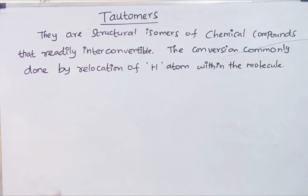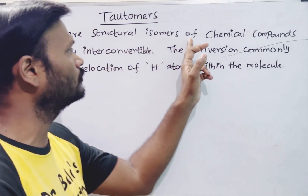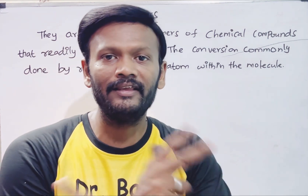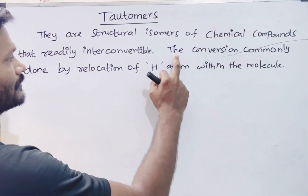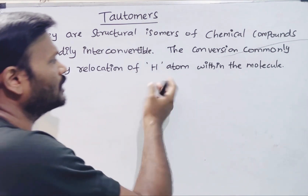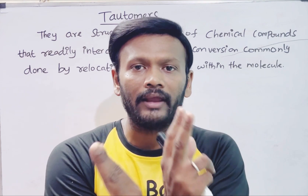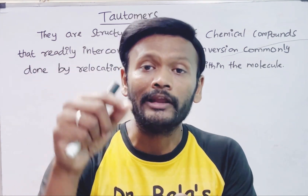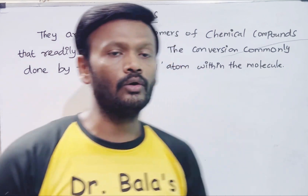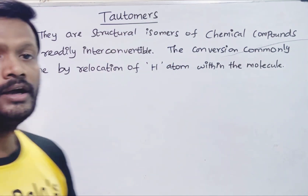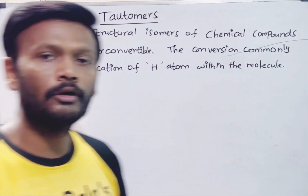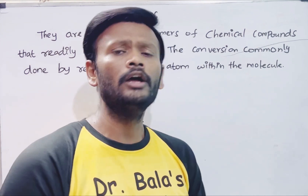First of all, let's see what tautomers are. Tautomers are nothing but they are structural isomers of chemical compounds that are readily interconvertible. The conversion is commonly done by the relocation of a hydrogen atom within the molecule itself. That relocation process gives us tautomers.